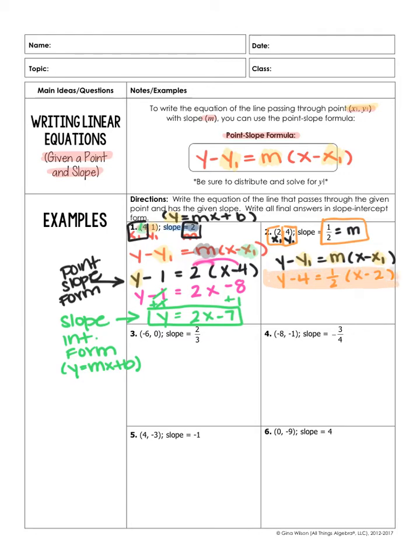But it wants us in slope-intercept form. So I have to solve this equation for y. So first thing I'm going to do is distribute my 1 half. So y minus 4 equals 1 half x. 1 half times negative 2 is negative 1. And lastly, to get the y by itself, I'd have to add 4 to both sides. When I do that, I'm left with y equals 1 half x. Negative 1 plus 4 is positive 3. And that would be my answer. All right. I'm going to have you guys try number 5 on your own.